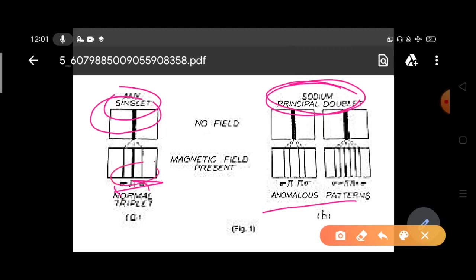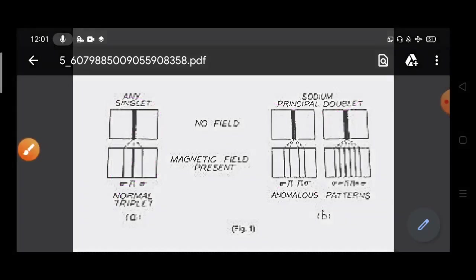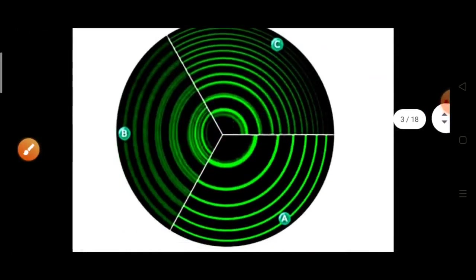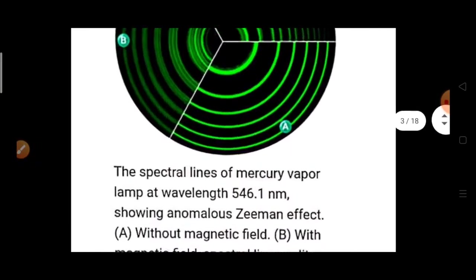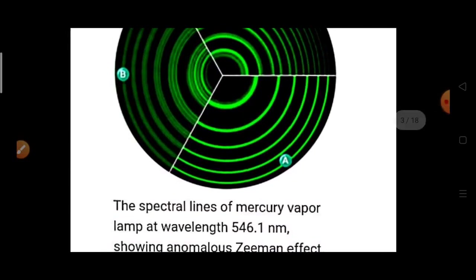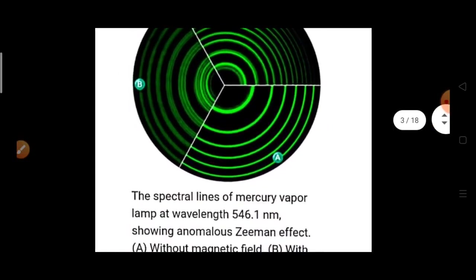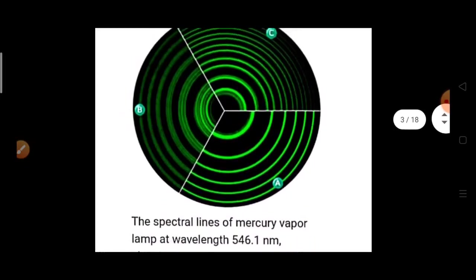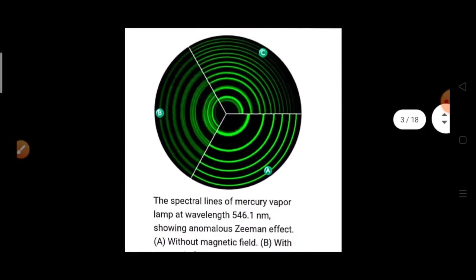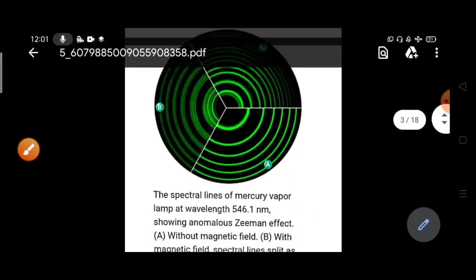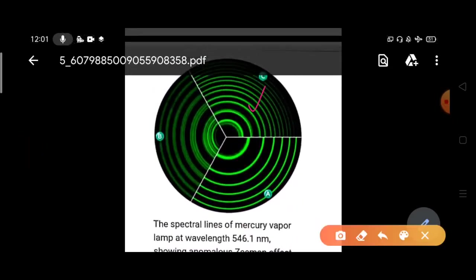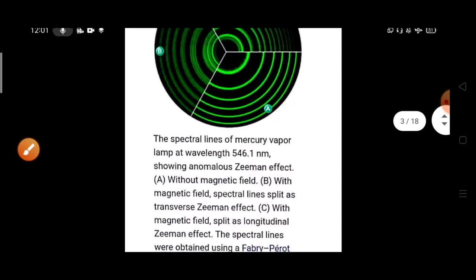To understand the physics behind the anomalous Zeeman effect, consider the spectral lines of a mercury vapor lamp at wavelength 546.1 nanometers. Figure A shows the spectral lines without a magnetic field. Figure B shows the transverse Zeeman effect, and figure C shows the longitudinal Zeeman effect.